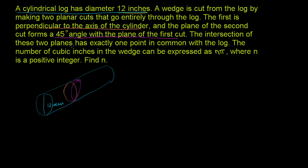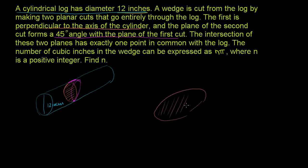The intersection of these two planes has exactly one point in common with the log — that would be this point right over here. So we need to find the number of cubic inches in the wedge expressed as n pi, and then figure out n. Let's draw this wedge that we've cut out. I'll make the base of the wedge the perpendicular cut — this cut right over here. That is the base of the wedge.